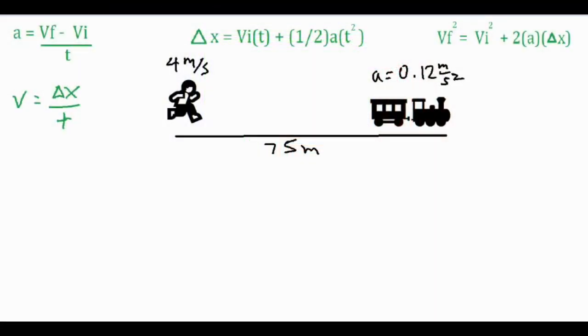In this video we're going to be solving a kinematics problem. The scenario is a person who's running at 4 meters per second trying to catch a train that's 75 meters away that has an acceleration of 0.12 meters per second squared.